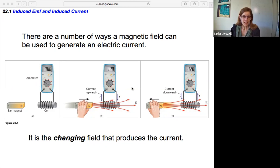The key here is that it's the changing field that produces a current. We don't have a current when the magnet's just sitting there, even if it's sitting right next to the coil. But when the magnet is moving relative to the coil, then the strength of the magnetic field is changing—it's increasing as it moves closer, weakening in the coil as it moves further away.